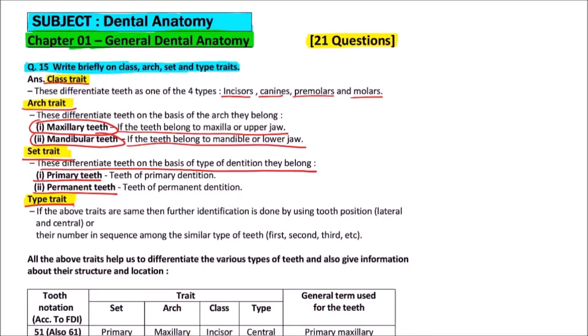Then type trait. If the above traits are same, then further identification is done by using tooth position—that is either lateral or central—or their number in sequence among similar type of teeth, like first, second, and third.